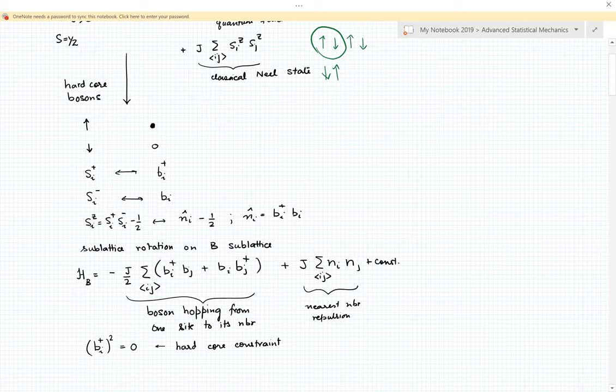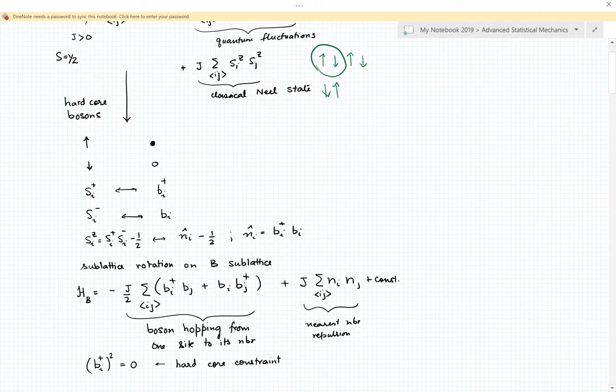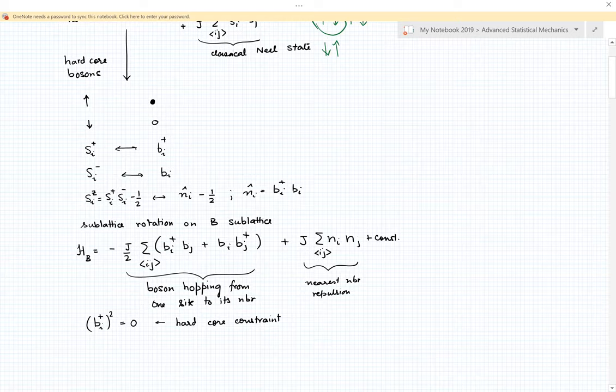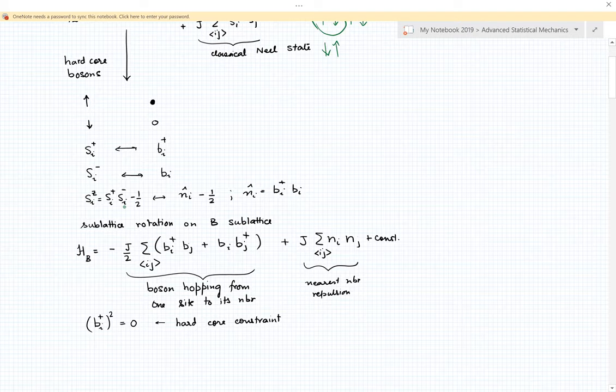Now we turn to a mapping of this problem to bosons. Here the up spin is mapped to a boson occupied at a site, down spin becomes an empty site. In terms of operators, S_i^+ which raises a spin at a site becomes a boson creation operator. S_i^- which lowers the spin from up to down becomes a boson destruction operator. Remember I'm talking about spin half, so that maps into hardcore bosons - you can't have more than two bosons at a site. And S_i^z becomes n_i minus half.